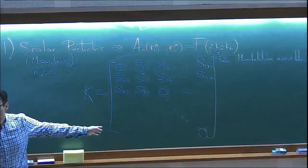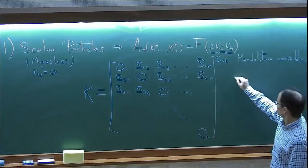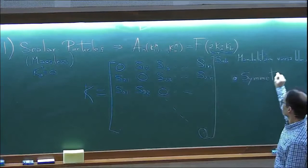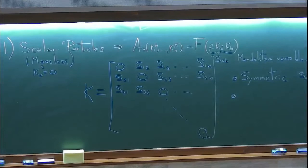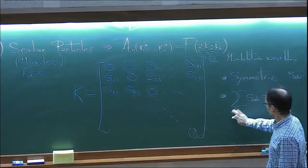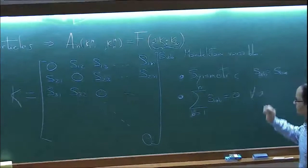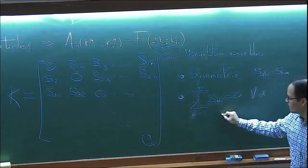Let's consider the matrix of Mandelstam invariants. What are the constraints this matrix has to satisfy to describe the kinematics of M particles? The constraints are: first, it has to be symmetric (S_AB = S_BA); and second, the sum of all rows or columns has to equal zero. This second constraint follows from momentum conservation: summing k_A dot k_B over B gives k_A dot the total momentum, which vanishes.